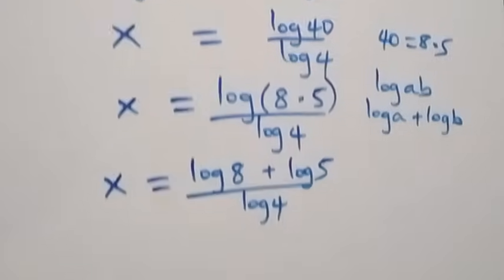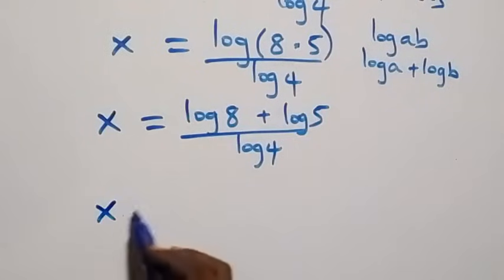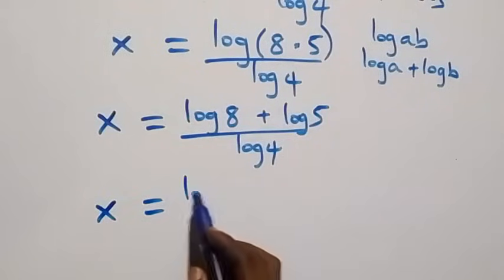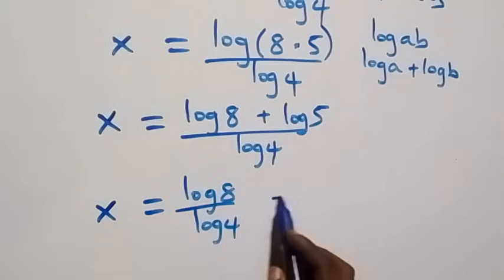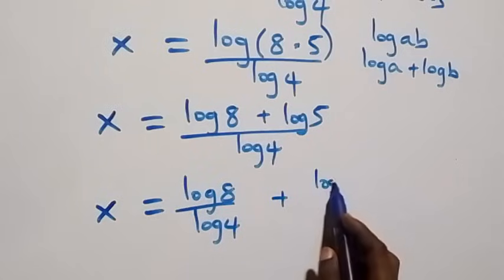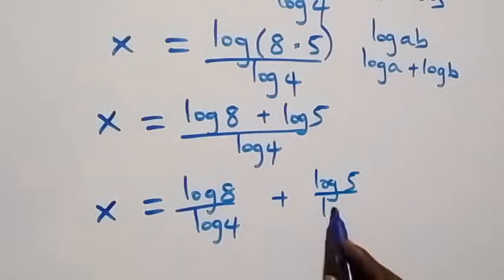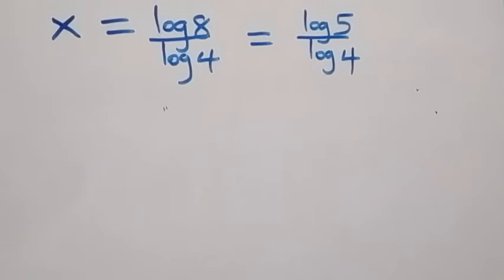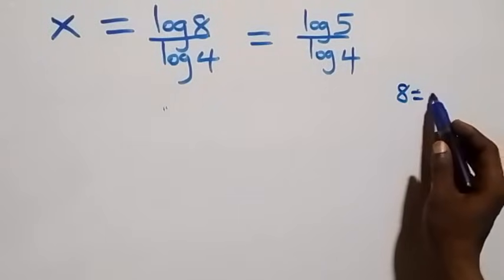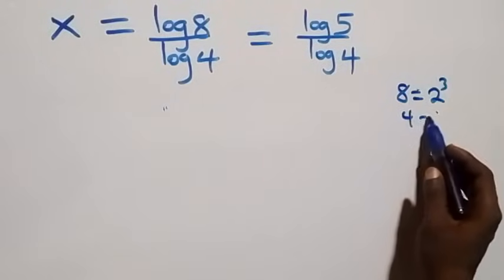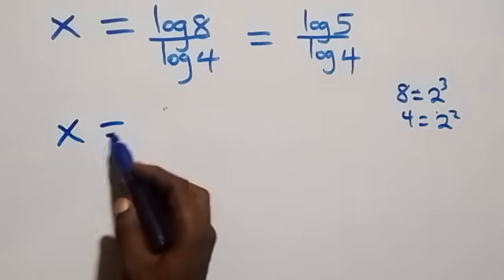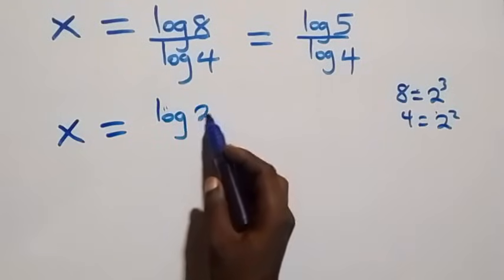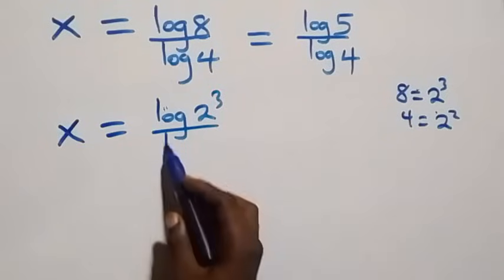Then we separate this into two fractions, and we have x equals to log 8 over log four plus log 5 over log four. From here, we can rewrite 8 as 2 times 2 times 2, which is 2 raised to power 3, and 4 as 2 times 2, which is 2 squared. So x equals to log of 2 raised to power 3 over log of 2 squared.